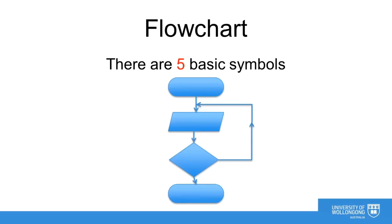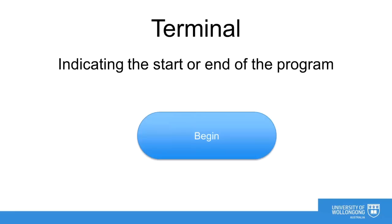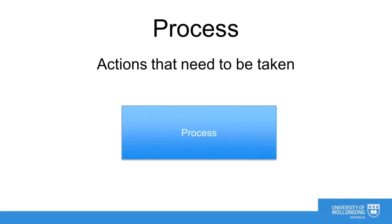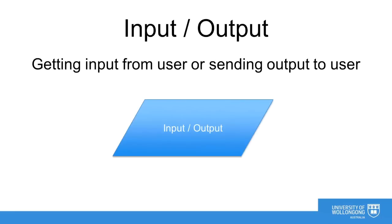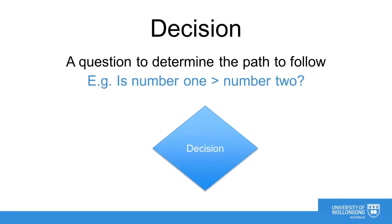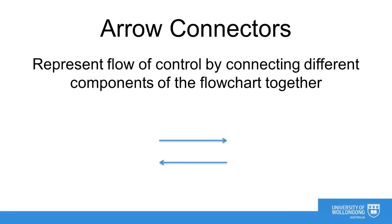Different symbols are used to represent different components of the flowchart. There are five basic symbols. Terminal, indicating the start or end of the program. Process, indicating an action that needs to be taken. Input output, used for getting input from a user or sending output to a user. Decisions, separate paths are taken depending on the answer to a decision. A decision could be as simple as yes or no, or true or false. Arrow connectors, are used to represent flow of control by connecting different components of your flowchart together.